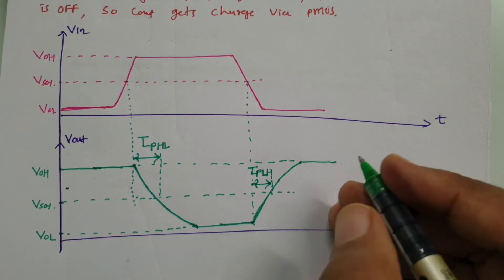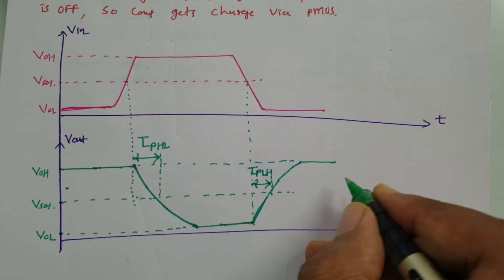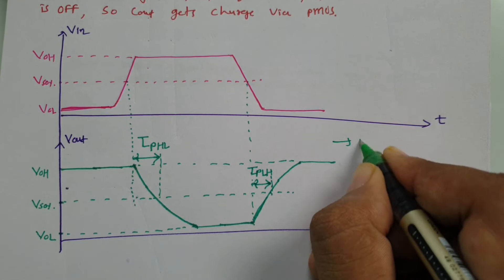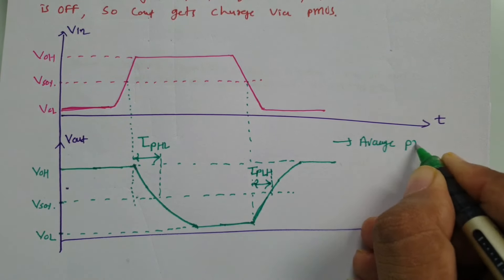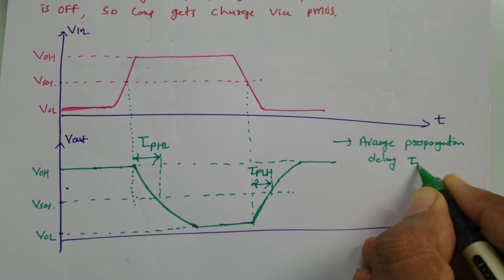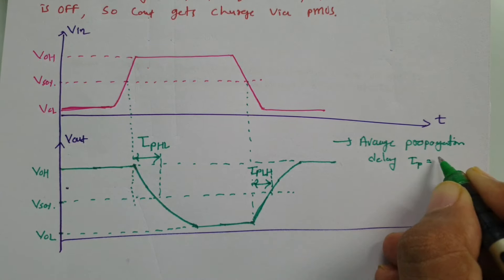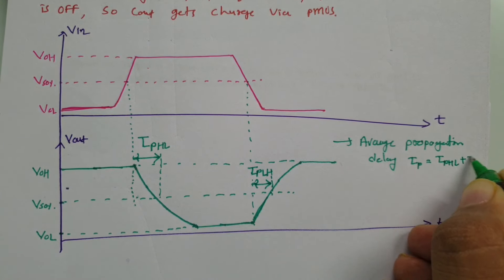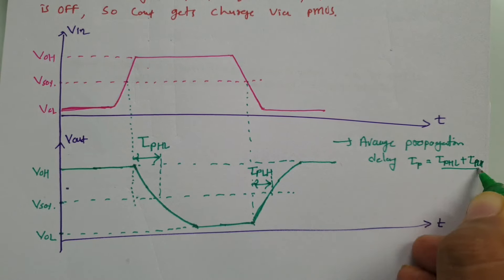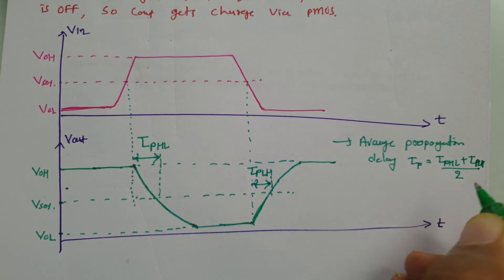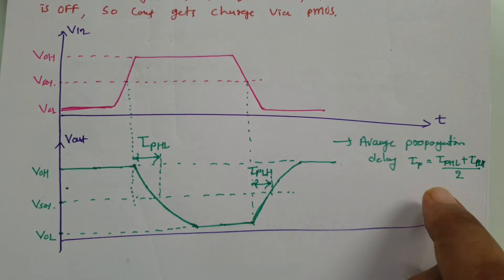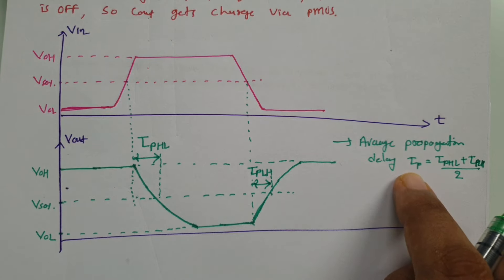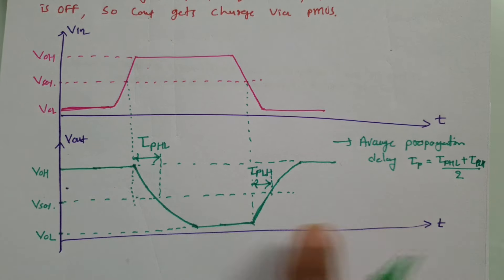The total average propagation delay t_p is defined as t_pHL plus t_pLH divided by 2. This is the basic calculation of propagation delay, which is the average of both transitions.